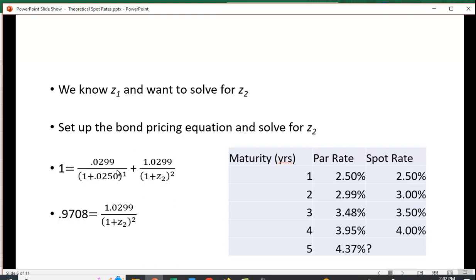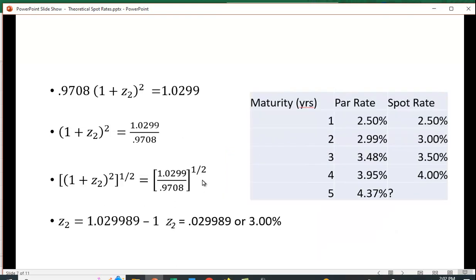I've taken the present value of this equation, solved this, and brought it over to this side, subtracted from both sides, and I get 0.9708 equals 1.0299 divided by 1 plus Z2 squared. I'm going to multiply both sides by 1 plus Z2 squared, to get it out of the denominator, and then divide both sides by 0.9708.